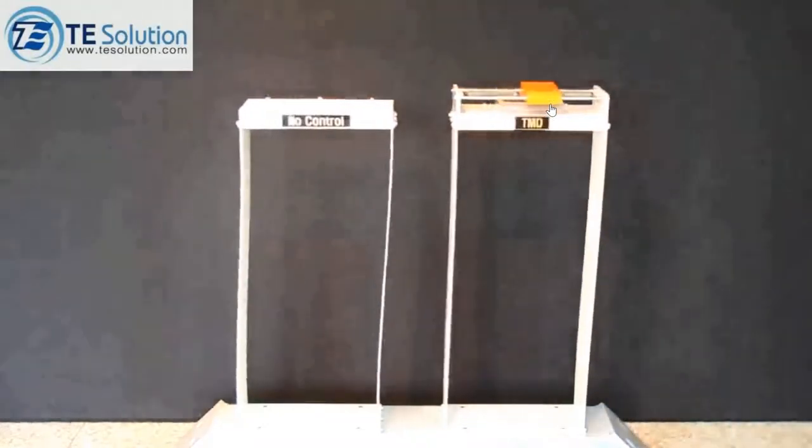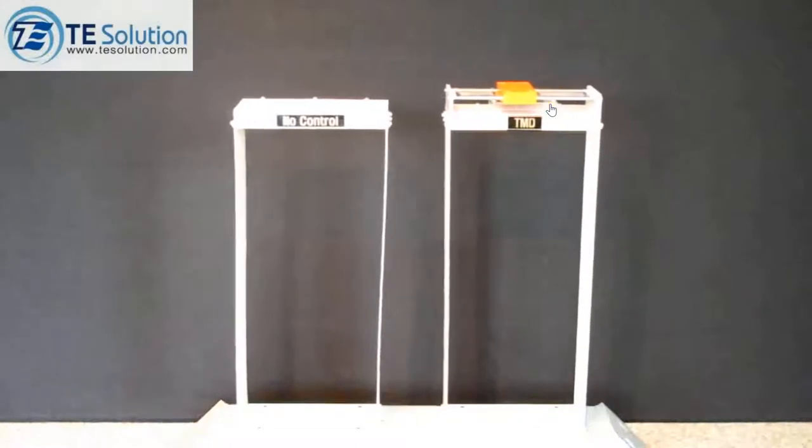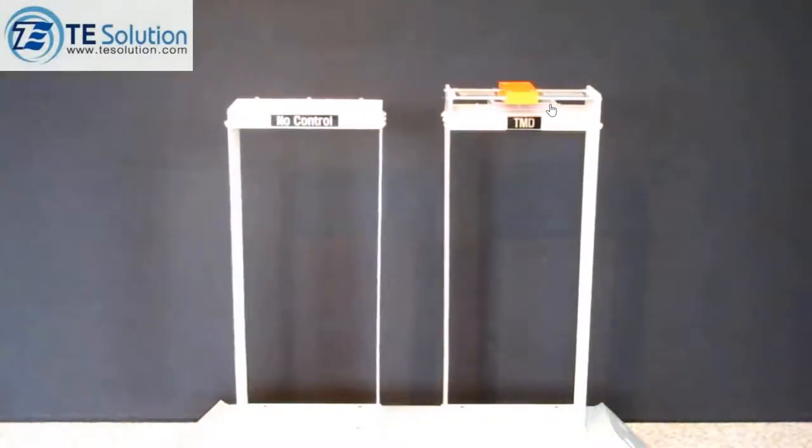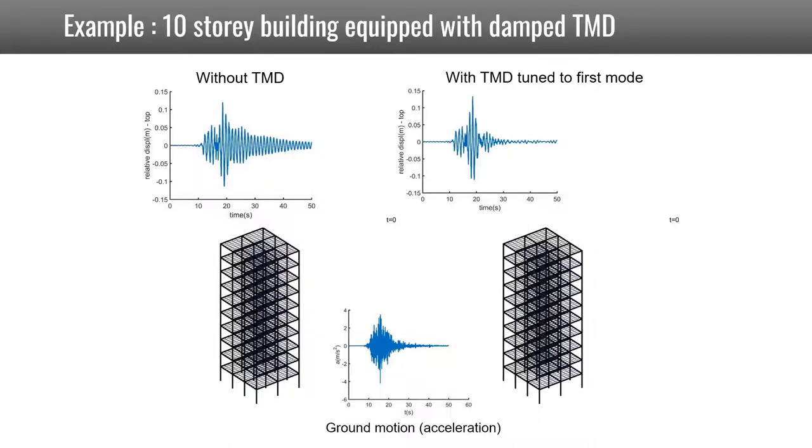Now the TMD will be released to show the effect of a TMD on the horizontal vibration of a high-rise building. So clearly, the damper is very efficient to reduce the levels of vibration.